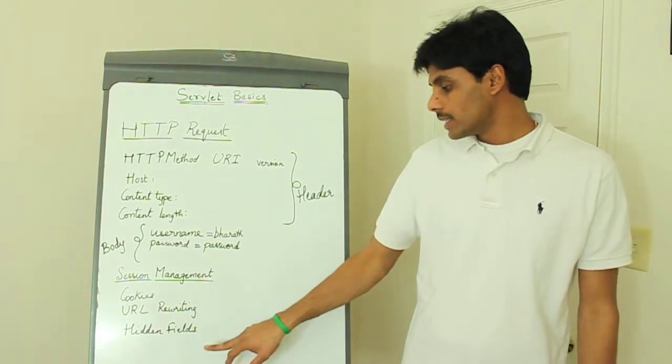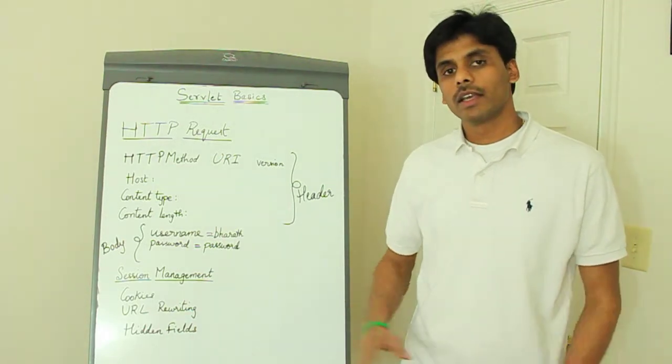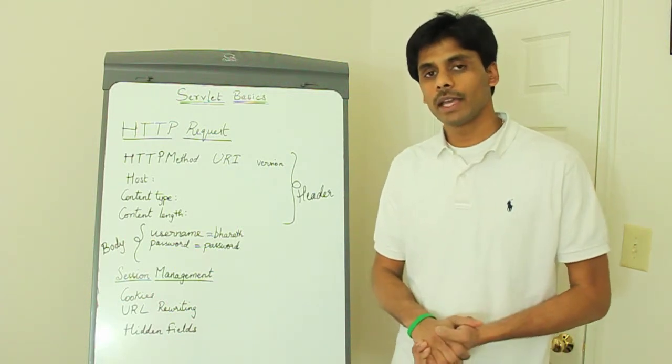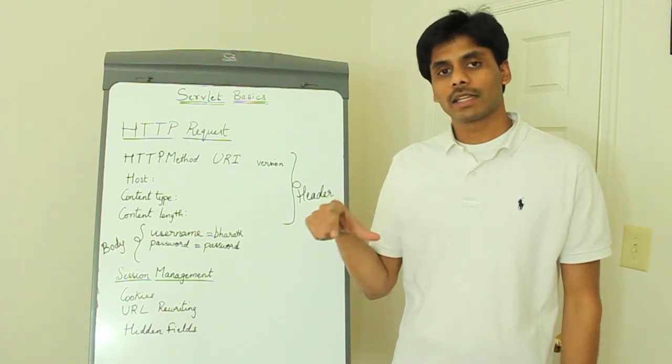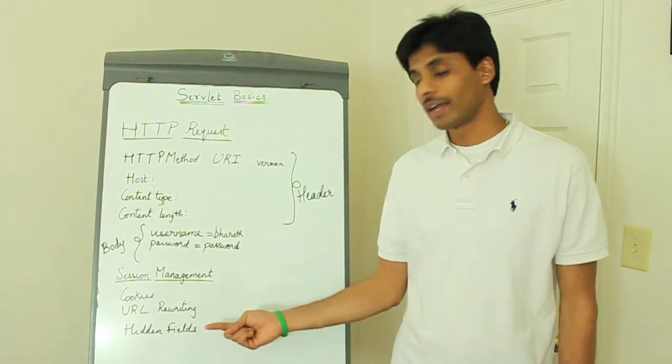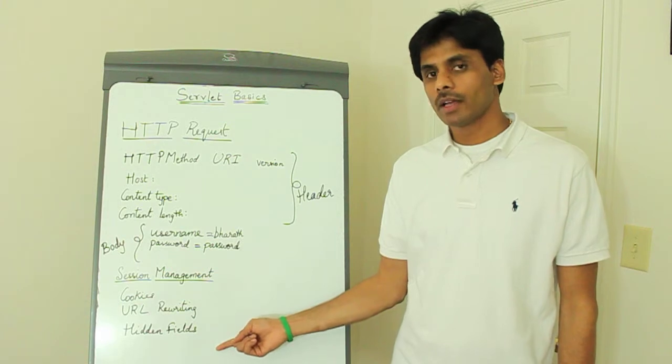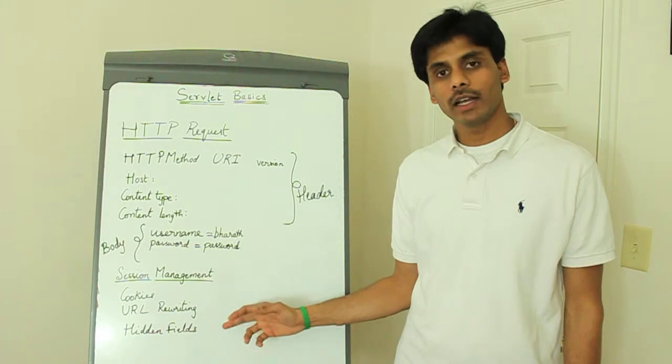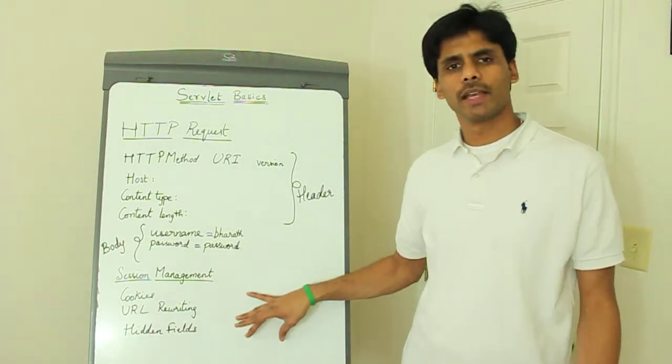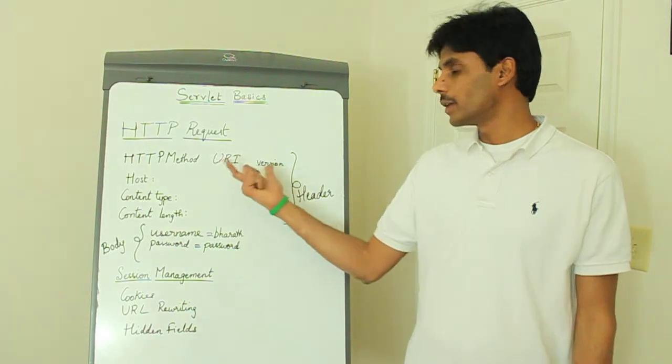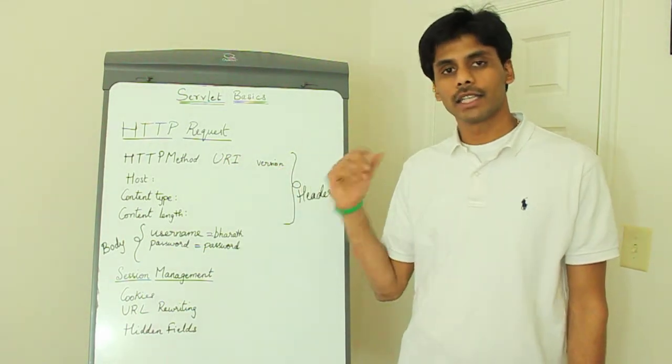The last one is hidden fields. If you are familiar with the HTML form element, you can also specify along with the text box, checkboxes, radio buttons, you can also have hidden fields within your HTML form. So instead of appending it to every URL, you can have a hidden field. And the name of it could be a session ID or a J session ID. And then the value of it will be the unique ID that the server generates.